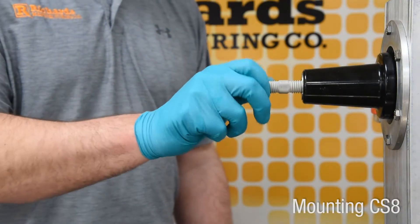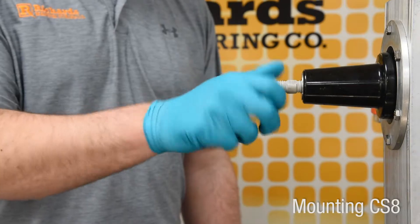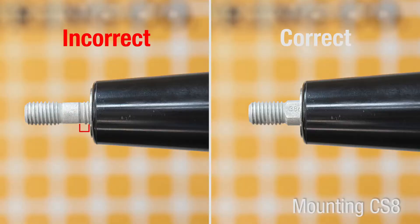Hand tighten stud fully into mating part so no threads are visible on the bushing side. If any threads are visible, confirm correct stud is being used and confirm bushing and stud are not damaged or cross-threaded.